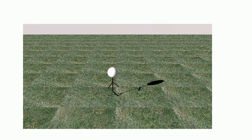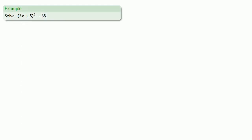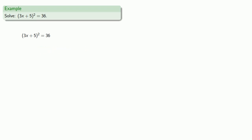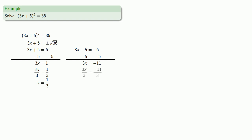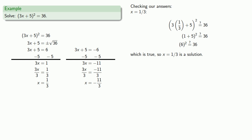For example, suppose the equation 3x plus 5, quantity squared, equals 36 falls out of the sky. We recognize this as something squared equals a number. So 3x plus 5 equals plus or minus the principal square root of 36. The square roots of 36 are 6 and negative 6, giving us two equations to solve. This gives two solutions. Substituting x equals 1 third back into the original equation gives a true statement, confirming x equals 1 third is a solution.